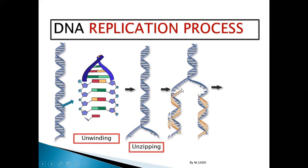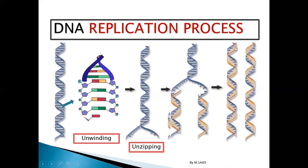The new strand being formed must be complementary to the original strand. So I have a new strand and an original strand. What is formed on each new DNA must be exactly the same as what was on the previous DNA. One original molecule splits to form two new DNA molecules, each containing one original strand and one new strand.